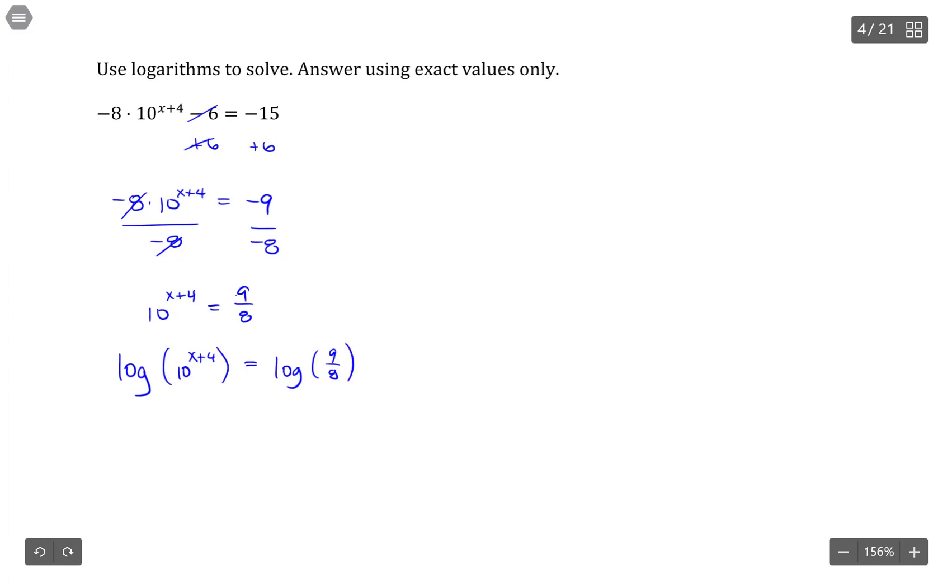Now what happens is this exponent can come out front of this logarithm, and then a log base 10 of 10 is just 1. Effectively what happens is I just end up with x plus 4 on this side.